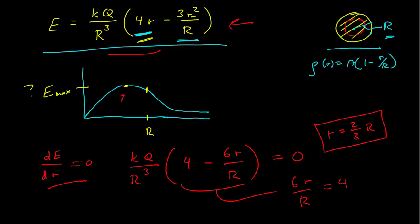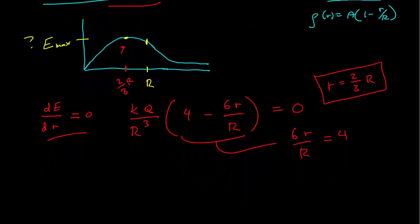So that tells us something. We know then that the location of the maximum is at 2 thirds of the radius, so it is, in fact, inside the charge distribution as we had anticipated.